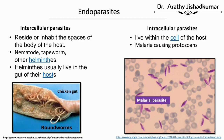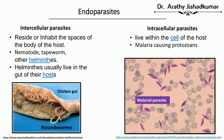The second category is intracellular parasite — these reside within the cell of the host. An example is malaria-causing protozoans. If you take blood from a malaria patient and check it under a microscope, you will be able to see the malaria parasite inside the blood. In this picture, you can see the purple-colored malaria protozoa along with red blood cells.